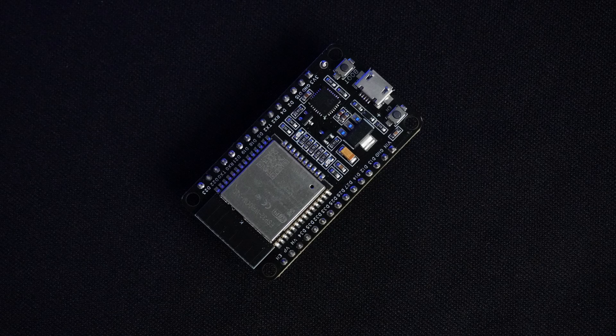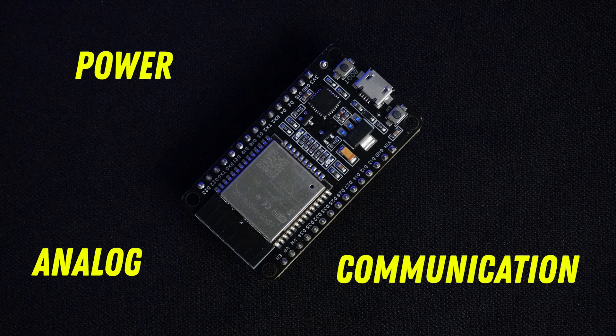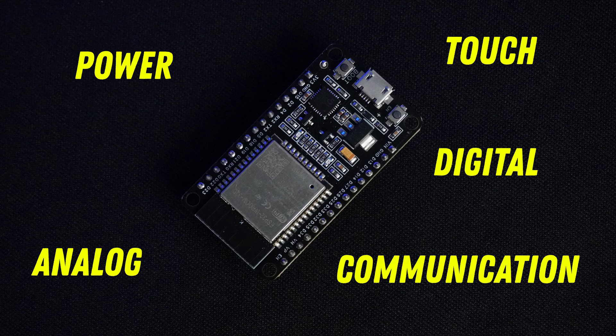To sum up, the ESP32 dev module has a variety of pins — from power to communication, analog to digital, and touch-sensitive to RTC. You can easily connect a wide range of sensors or modules for any project you have in mind. I hope you gained some insights about the ESP32 through this video. If you have any questions, put them in the comment section. I will add all the codes used in this project in the description. Don't forget to like, share, subscribe, and hit the bell icon for more ESP32 projects.